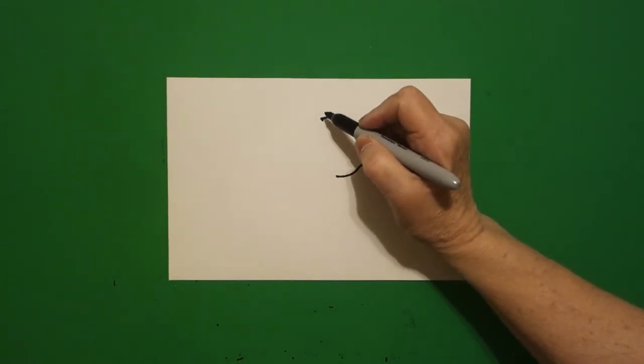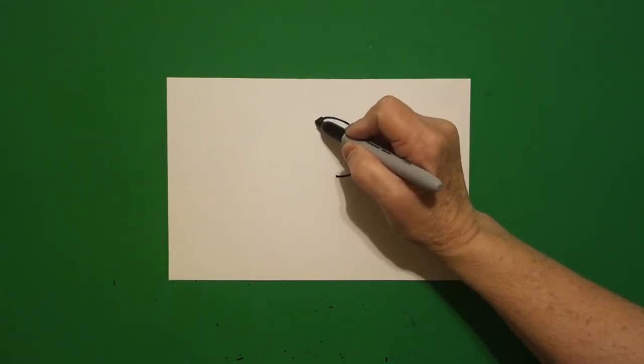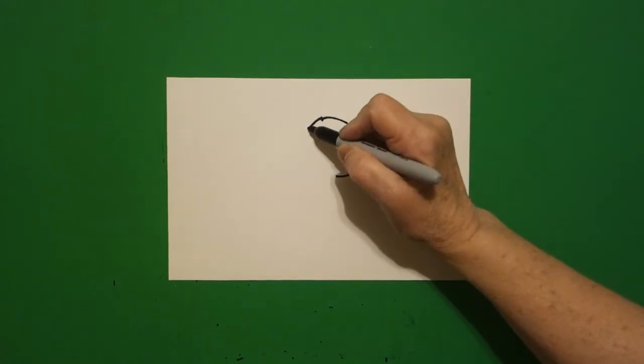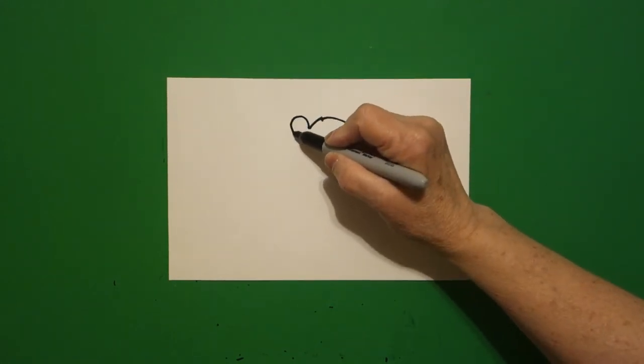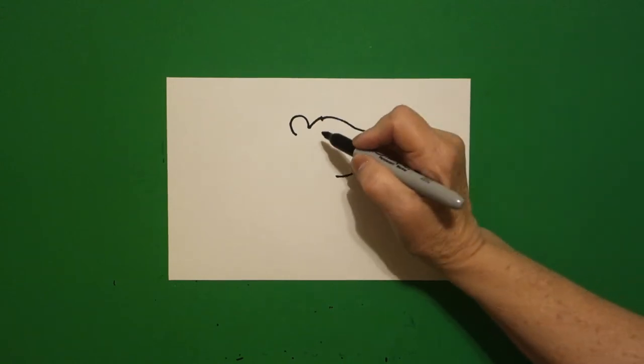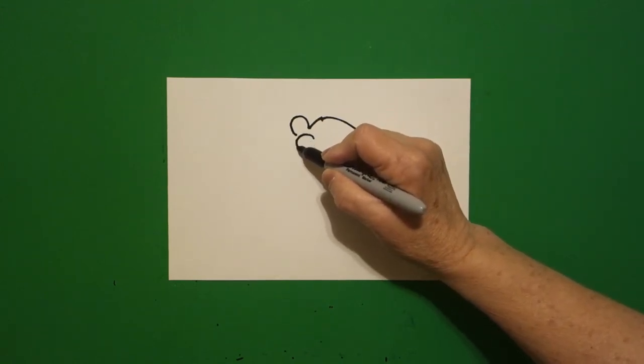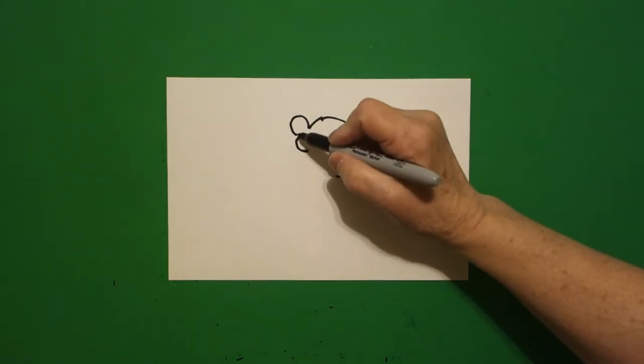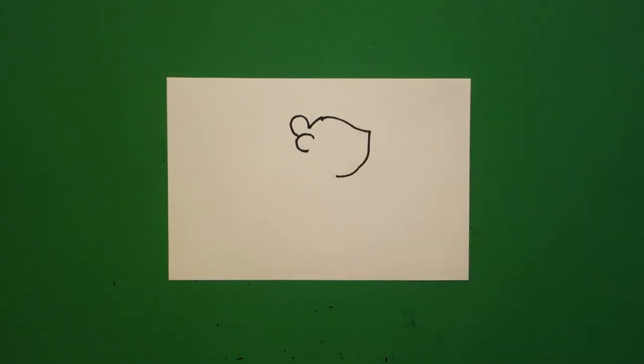I come back to my dot. I bring this line down and leave it floating because now I'm going to add a little baby curved line. I come in and I mimic that line again. I add another little baby curved line.